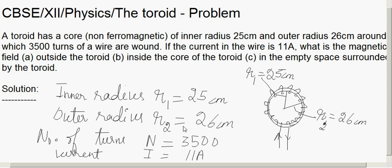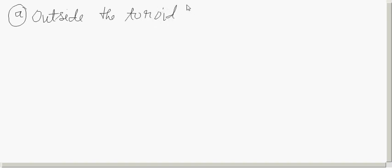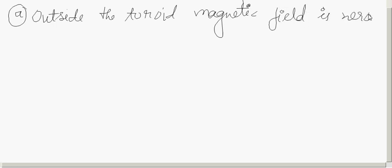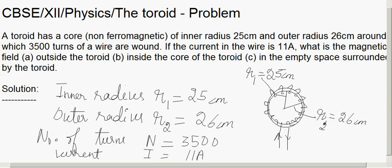Now we need to find out the three cases. Outside the toroid, the magnetic field is 0 — we know that. You can refer to the derivation done in the previous class. To confirm, apply Ampere's circular law: outside the toroid, magnetic field is 0.